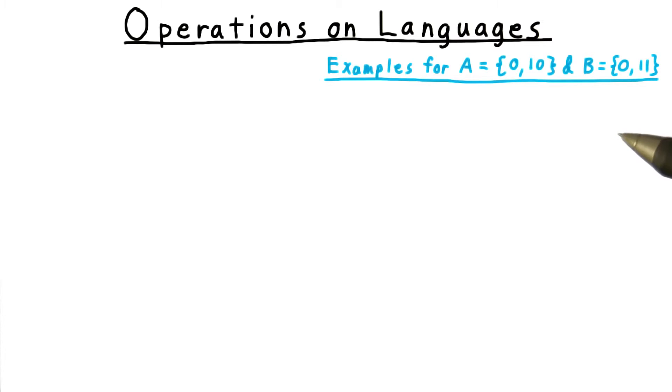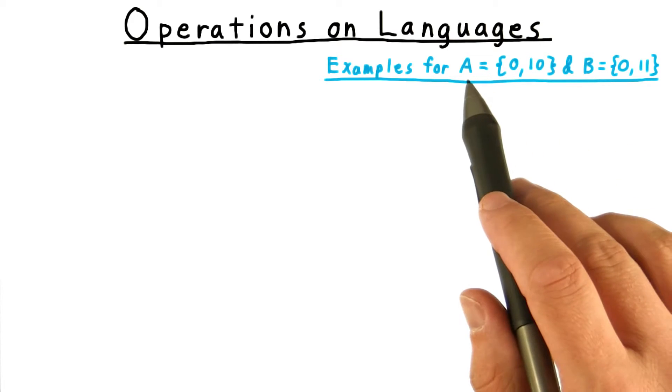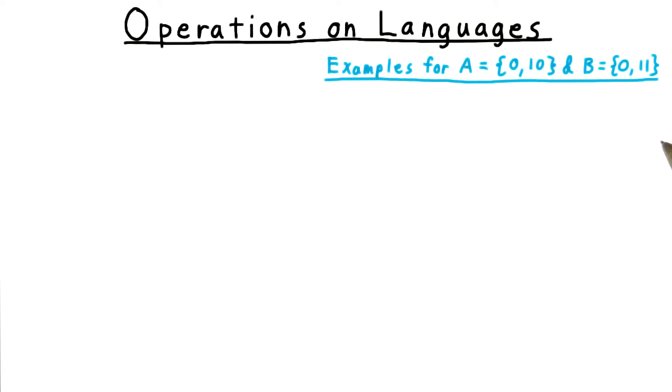In addition to defining the notion of a language itself, we want to define some operations on languages and establish some notation. We'll illustrate using these two languages over the 0, 1 alphabet.